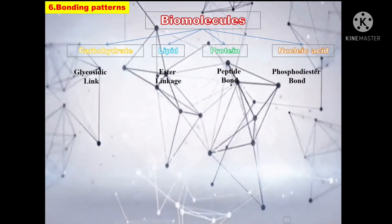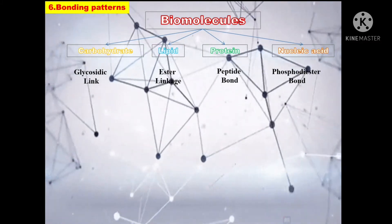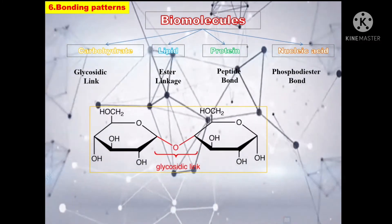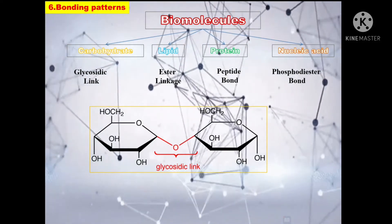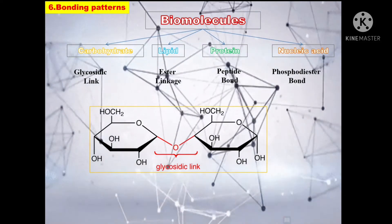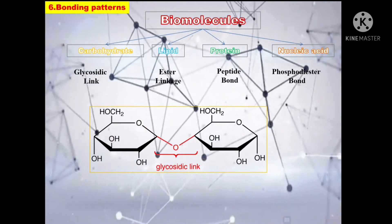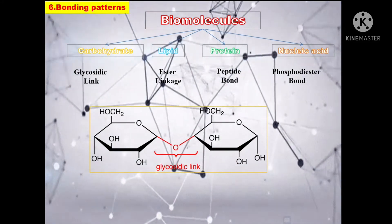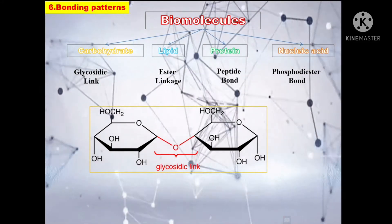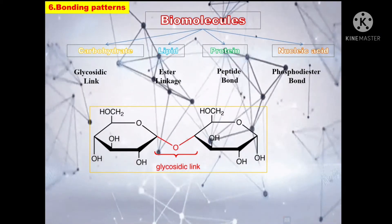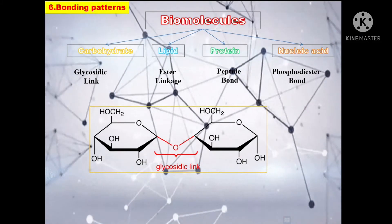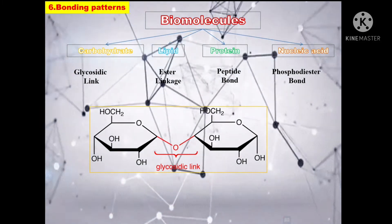First the carbohydrates. The bond that is formed between two monosaccharides is known as glycosidic bond. Let me explain how the bond is formed. When two monosaccharides bond together, they form a carbohydrate called disaccharide. Two monosaccharides bond together through a dehydration reaction called condensation reaction.